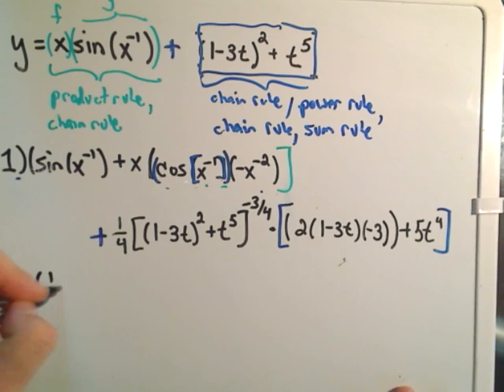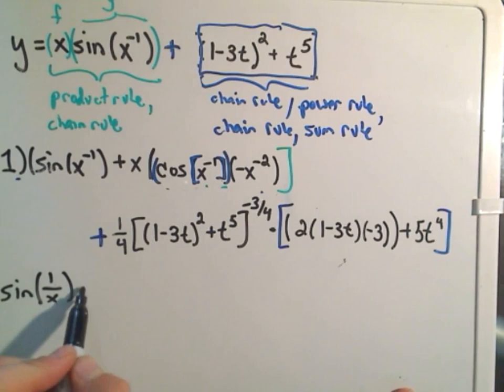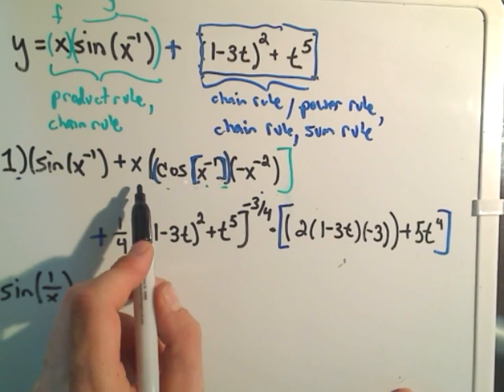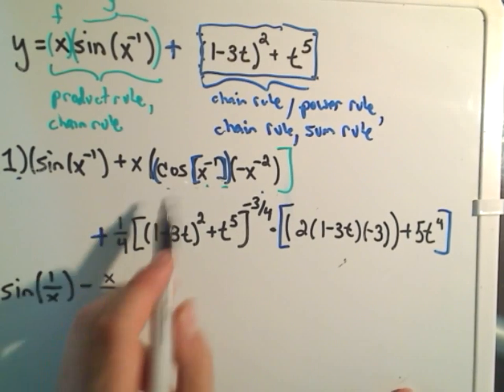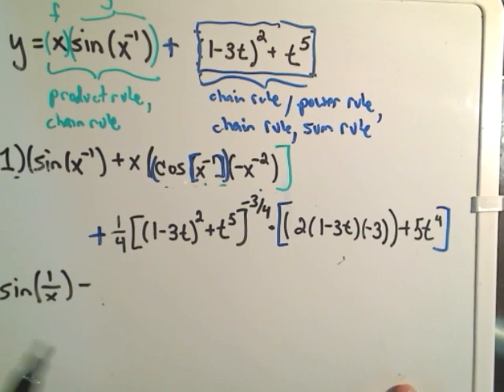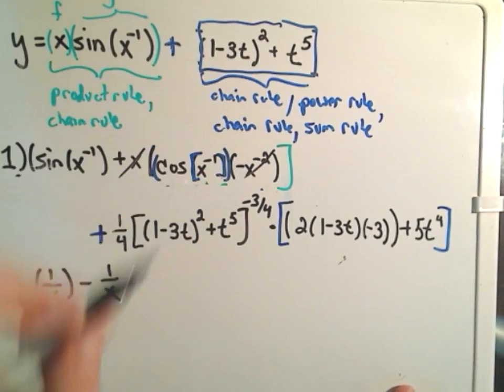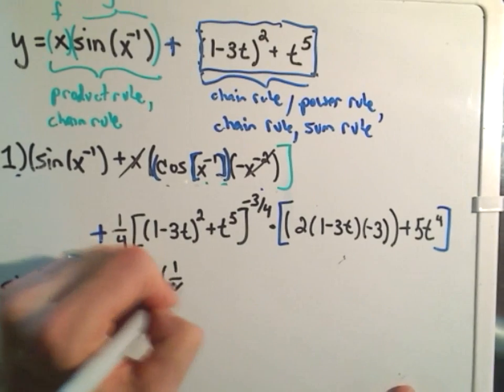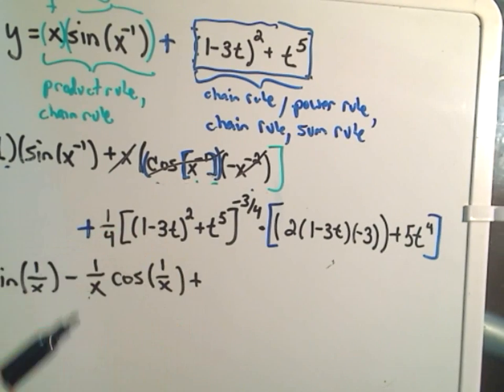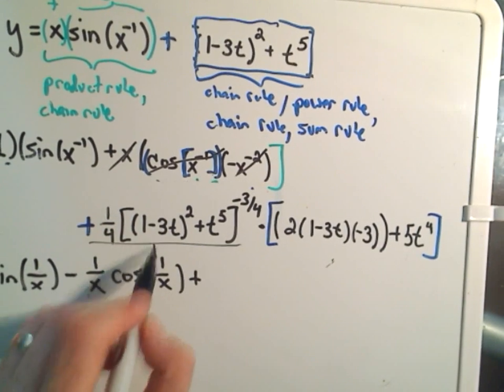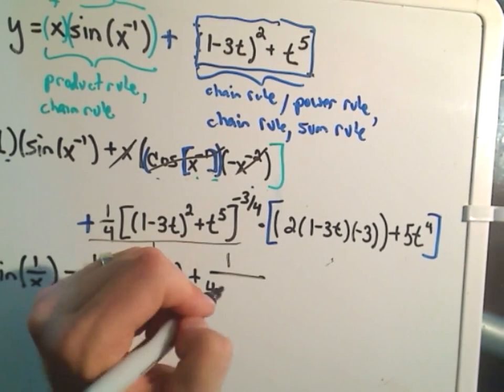So, we'll get sine. We can rewrite that as 1 over x. Let's see, what happens in the next part? The positive and the negative will make a negative. We would have x. The x squared would go to the denominator. So, we would have x over x squared in the denominator. But, that's the same thing as 1 over x. So, that'll take care of that stuff.